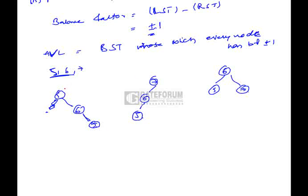Here the balance factor of 5 is minus 2, because balance factor equals height of left subtree minus height of right subtree. Since this is minus 2, this cannot be an AVL tree. Similarly, the balance factor of 7 is 2 in another arrangement, so that one also cannot be an AVL tree. Only the balanced arrangement has balance factors of 0 at each node, so that qualifies. Therefore the number of different AVL trees with nodes 5, 6, 7 is 1, and the correct option is option A.